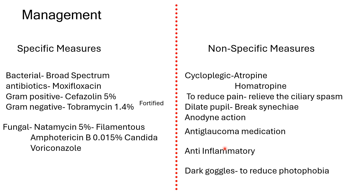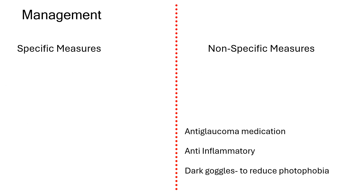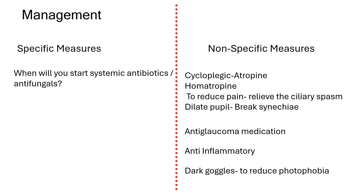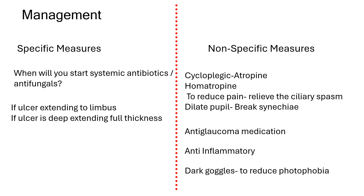If intraocular pressure is raised, give anti-glaucoma medication. Give systemic anti-inflammatory agents for pain relief — not topical. Prescribe dark goggles for photophobia. Do not patch the eye in any infection as it promotes further infection. Systemic antibiotics or antifungals are started when the ulcer extends to the limbus or is deep and full-thickness involving the anterior chamber.